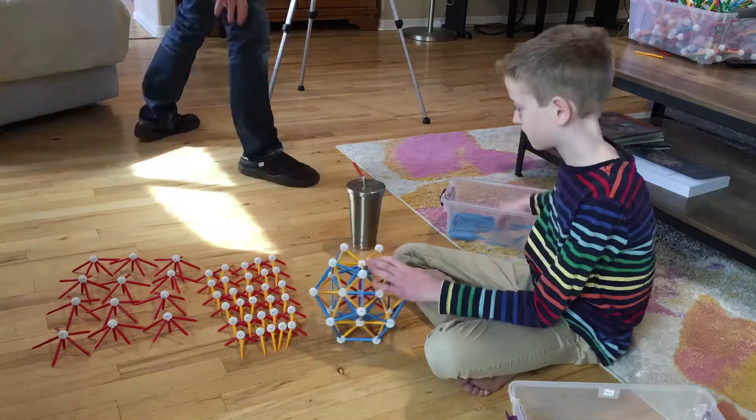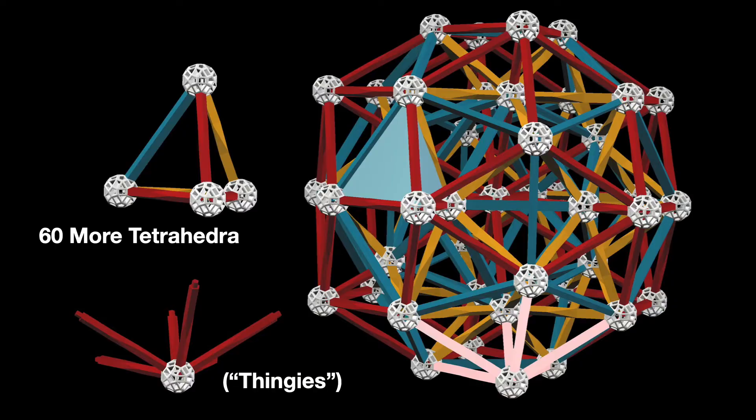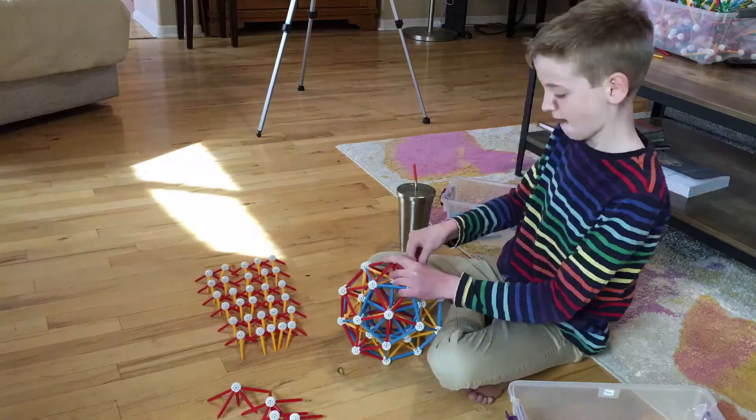Next there are 60 more tetrahedra in circles of five. That's those little thingies you're seeing that I'm adding on. After this, the envelope will be a rhombic triacontahedron.